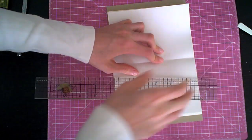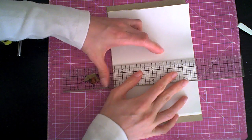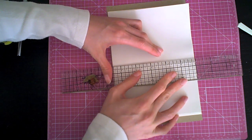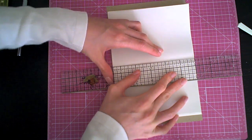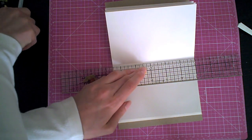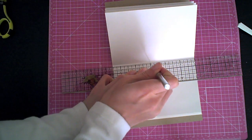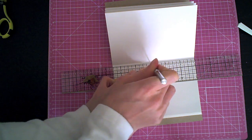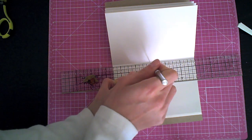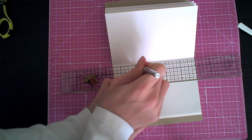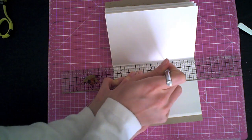Now I take a grid ruler and center it and mark the center and also 1 inch from the center at each side, to the left and to the right of the center.